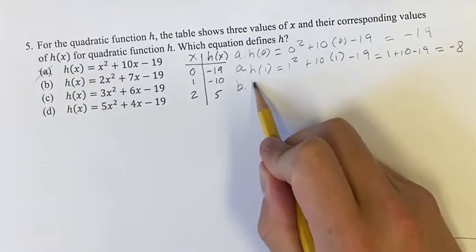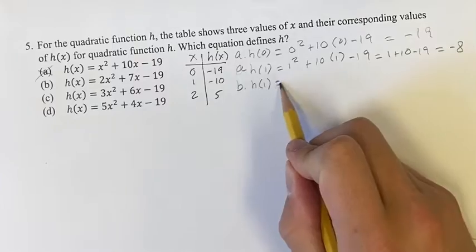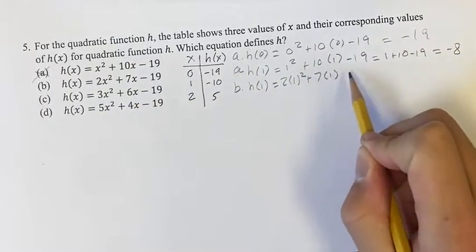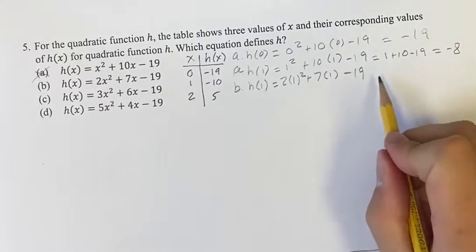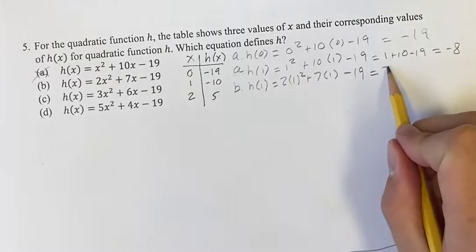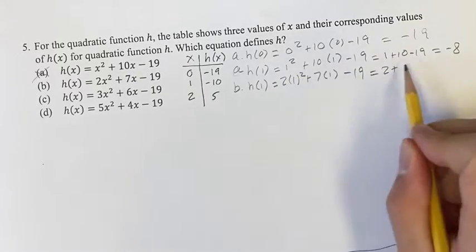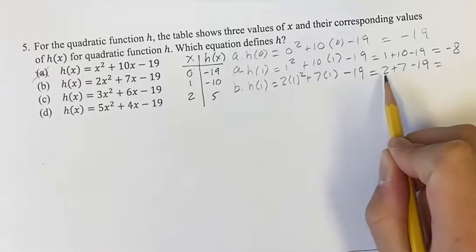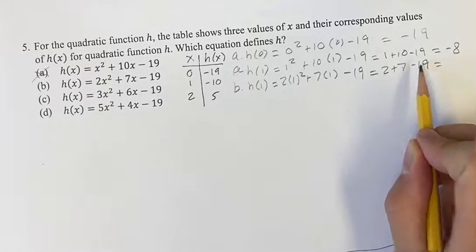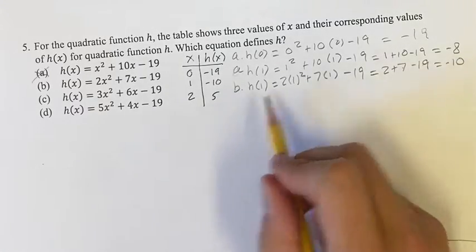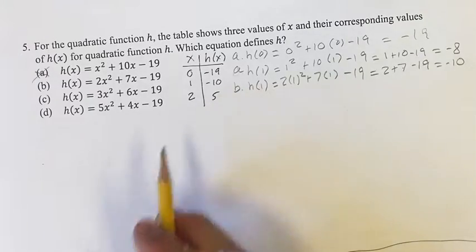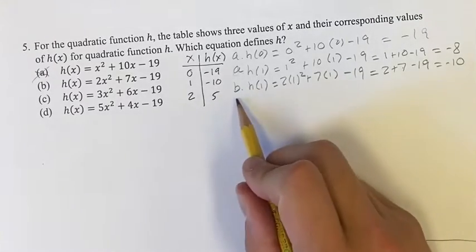Moving on to b, plugging in for h(1), that's going to be 2(1²) + 7(1) - 19. That's going to look like 2 times 1 is 2, plus 7 times 1 is 7, minus 19. That's 2 + 7 = 9, 9 - 19 = -10. So this works, this is a potential option. We're going to have to check it for x = 2.